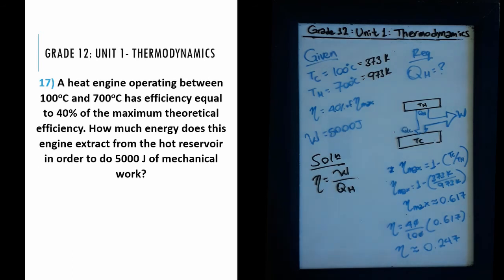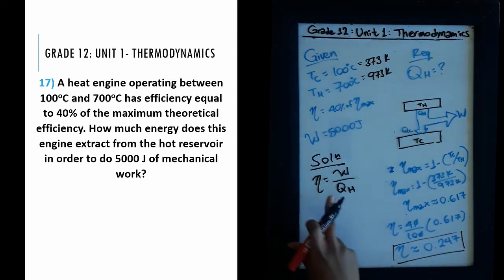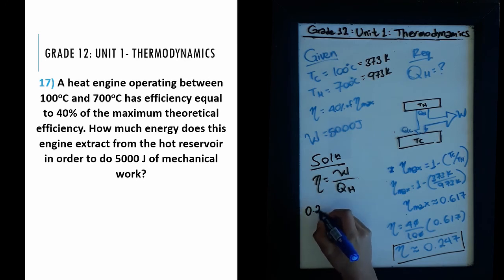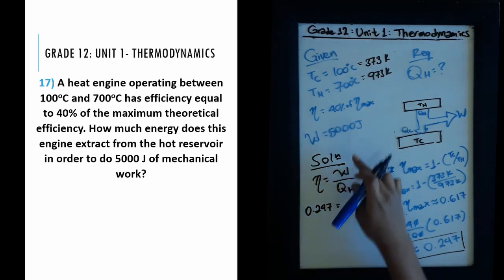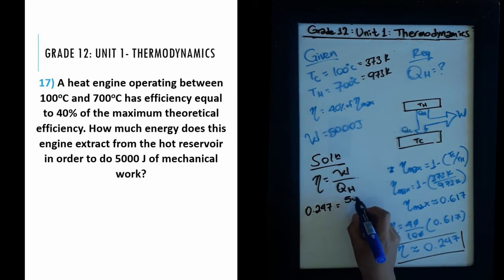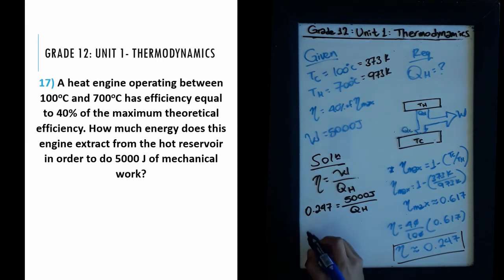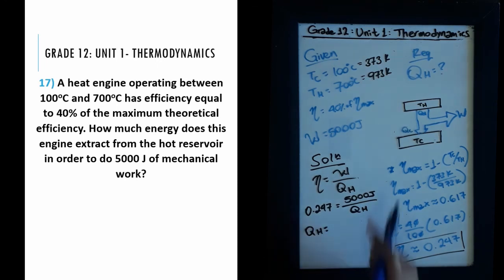This question requires a calculator given the precision needed. The efficiency we got is approximately 0.247. Now bringing this back to the efficiency formula: efficiency equals work divided by Q_H. We have efficiency = 0.247 and work = 5000 joules. So Q_H equals 5000 divided by 0.247.